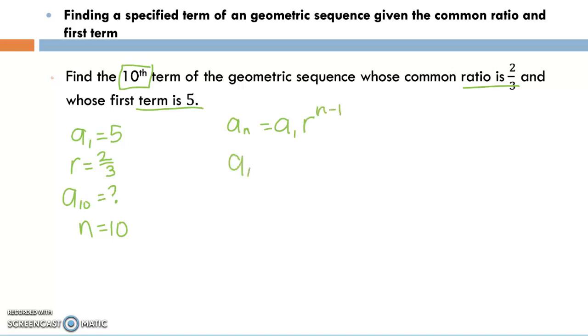My tenth term is going to be my first term which is five times the common ratio of two-thirds raised to the ten minus one. So my tenth term equals five times two-thirds raised to the ninth power.